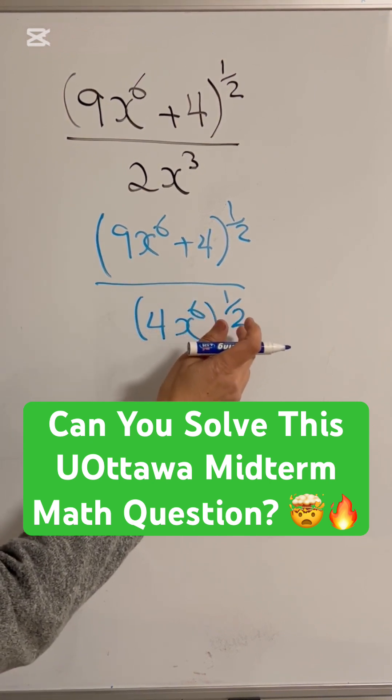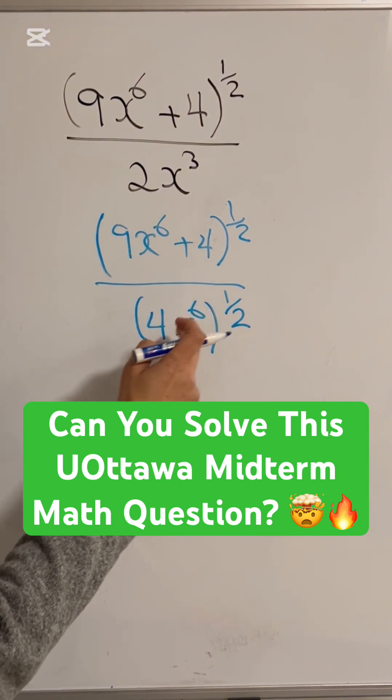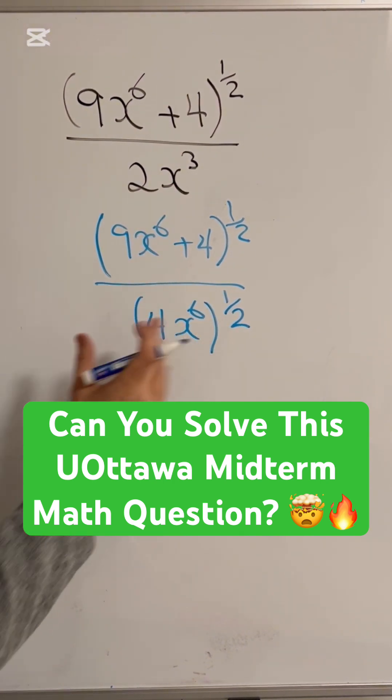And we know to the power of 1 half is the same as the square root. The square root of 4 is 2, the square root of x to the 6 is x to the 3, so we haven't changed anything except the look of this.